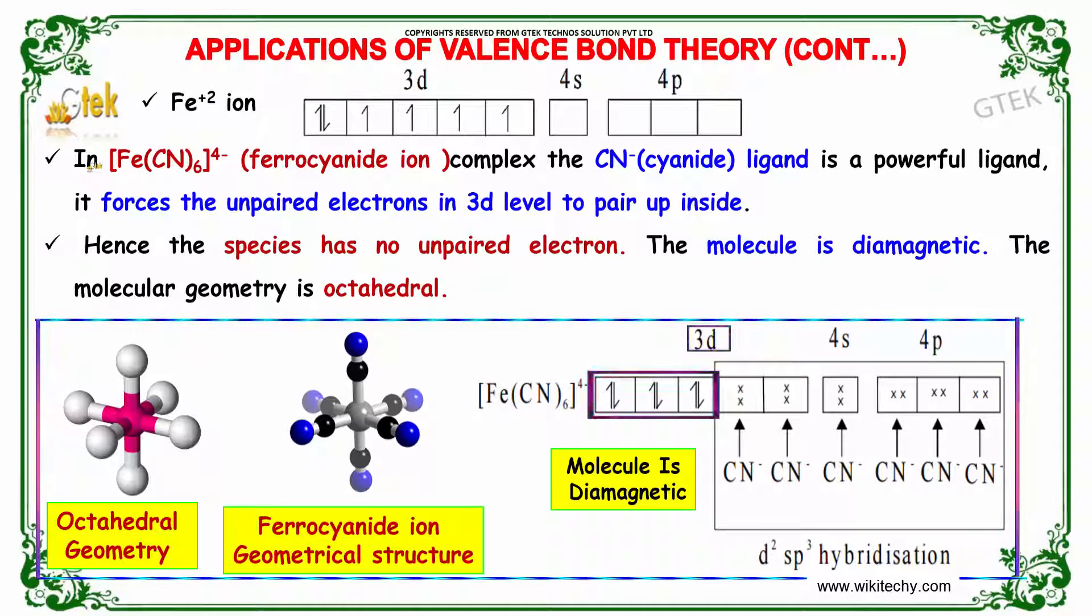With the FeCN6 ferrocyanide complex, the CN- cyanide ligand is a powerful ligand that forces the unpaired electrons in the 3d level to pair up. Hence, the species has no unpaired electrons, the molecule is diamagnetic, and the geometry is octahedral.